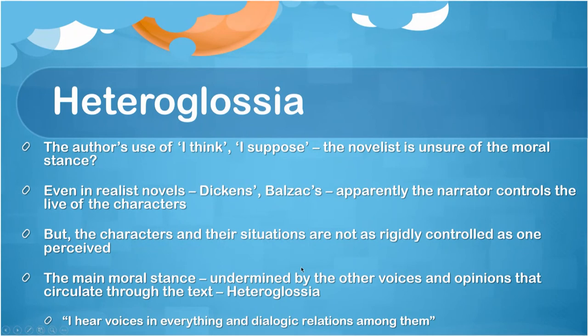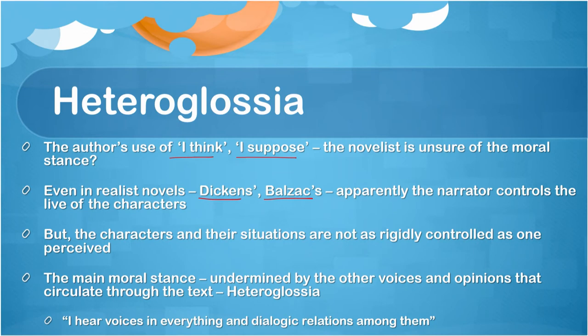Bakhtin presented the novel in contrast with monophonic genres such as epic and poem, believing that the novel embodies other voices, gives space to the other or the different, and encourages dialogue between discourses. It was this notion of the novel as a space promoting other voices and different kinds of discourses across texts, sites, and cultures that influenced Kristeva and others. In this context Bakhtin coined the term heteroglossia, arguing that even in the most realist of texts — such as those of Dickens or Balzac — the narrator uses phrases like 'I think' or 'I suppose' when unsure of certain moral stances.